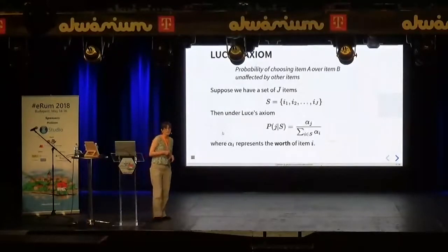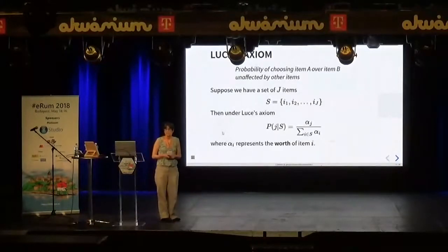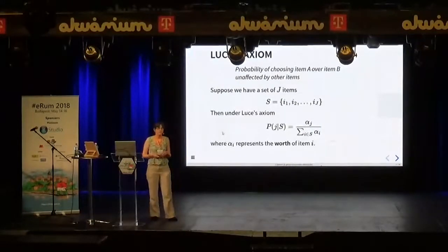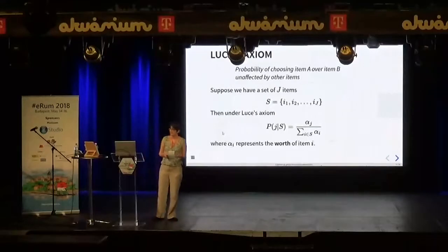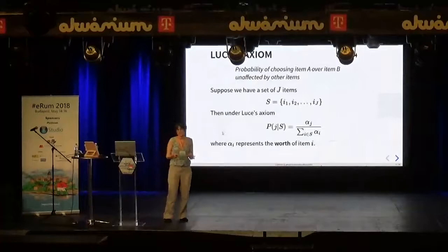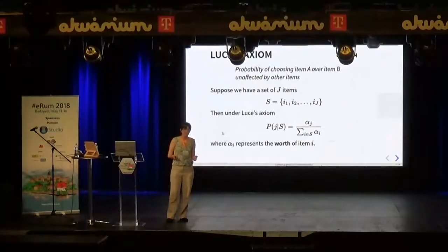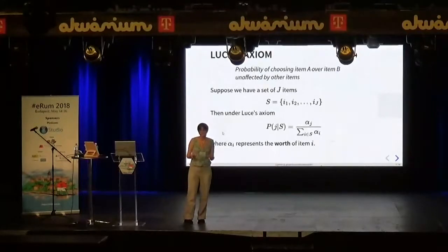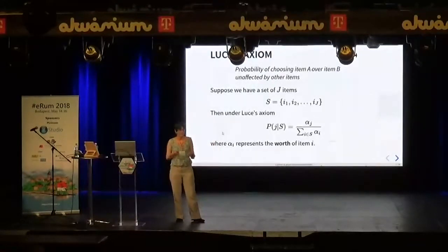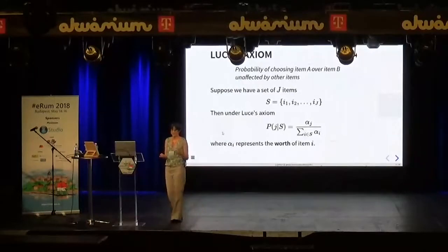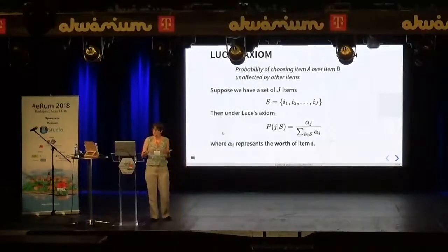A classical way to approach this problem is to work from Luce's axiom. This states that the probability of choosing one item, say item A, over another item, item B, is unaffected by the other items. So if I say I prefer Coca-Cola to lemonade, that's going to be the same whether you give me just those two items, or ask me to rank Coca-Cola, lemonade, and Fanta. It doesn't matter whether Fanta comes first, second, or third — I'm still going to put Coca-Cola before lemonade. So it's a reasonable sort of basis.